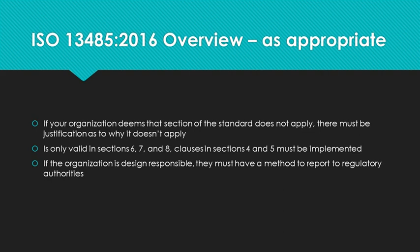Throughout ISO 13485, the phrase 'as appropriate' is used. If your organization deems that a section of the standard does not apply — for example, your product does not have service or installation — you must note that as a justification as to why it does not apply. Usually, you state this in the scope in the quality manual. Not applicable can only be done in clauses in sections 6, 7, and 8. Reporting to regulatory authorities is a clause in section 8. However, if the organization is design responsible, then they must report to regulatory authorities, so that clause cannot be deemed not applicable, even if they are a component manufacturer. All requirements in sections 4 and 5 must be implemented — none of them can be excluded or determined as not applicable.